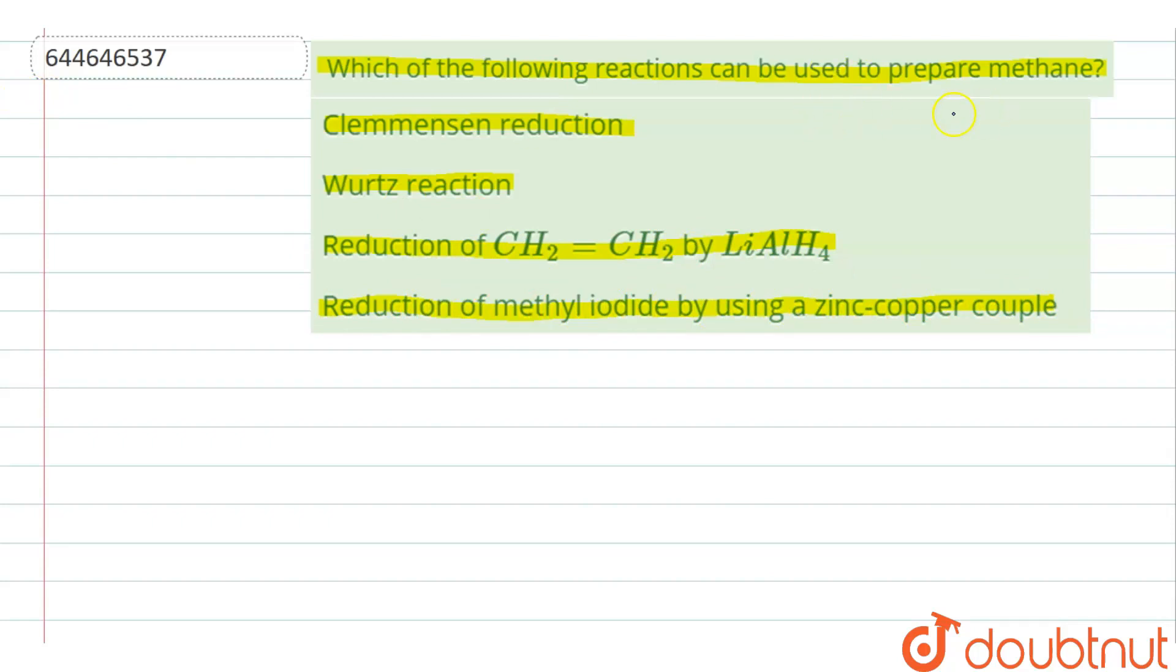We have to tell which of these reactions can be used to prepare methane. As we know, methane is CH4 and it contains only one carbon atom. If we talk about Clemmensen reduction first.